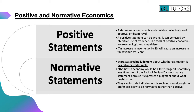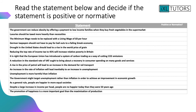A normative statement, however, expresses a value judgment about whether a situation is desirable or undesirable. For example: 'The British economy would be a lot stronger if Geoff Riley was governor of the Bank of England.' That's a normative statement because it gives a judgment about something that ought to be. A helpful tip: normative statements will include indicator words such as 'should', 'ought', or 'prefer'. Now decide which of the given statements are positive and which are normative — pause the video, that should take about four minutes.